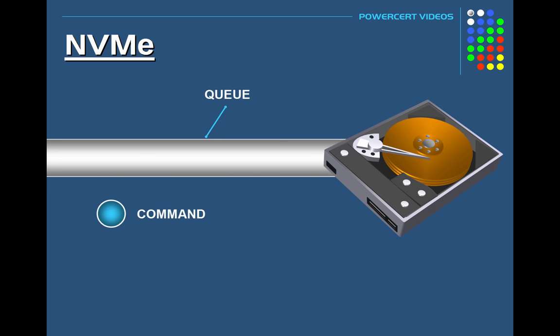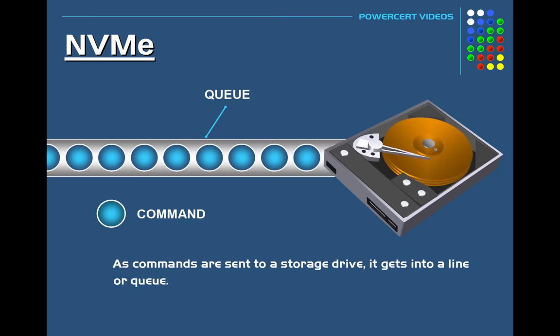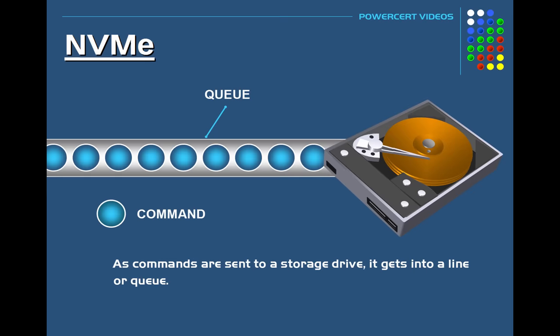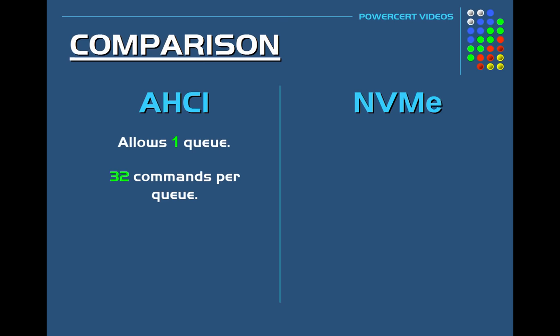Another advantage NVM Express has over AHCI is the command queue — a queue for enabling the delay of a command to be executed. As commands are sent to a storage drive, they get into a line or queue, and as each command finishes executing, the drive moves to the next command. AHCI allows one queue with up to 32 commands, but NVM Express allows 64,000 queues with each queue capable of 64,000 commands. In theory, if you maxed out NVM Express, you could fulfill a staggering 4,096,000,000 commands.